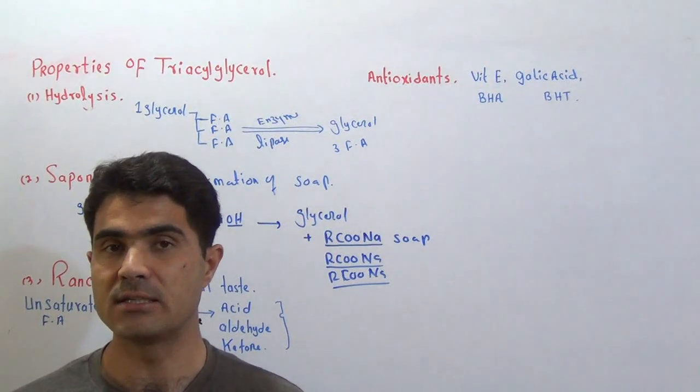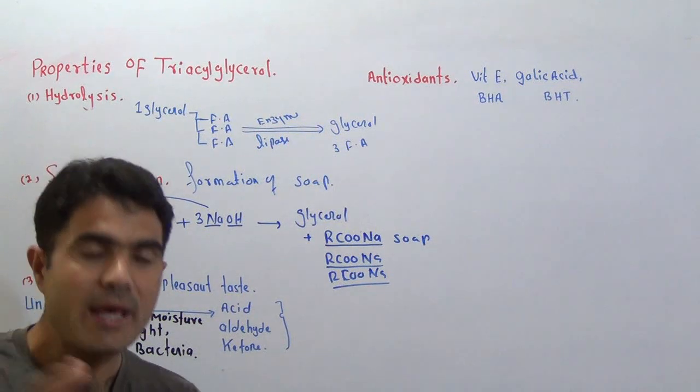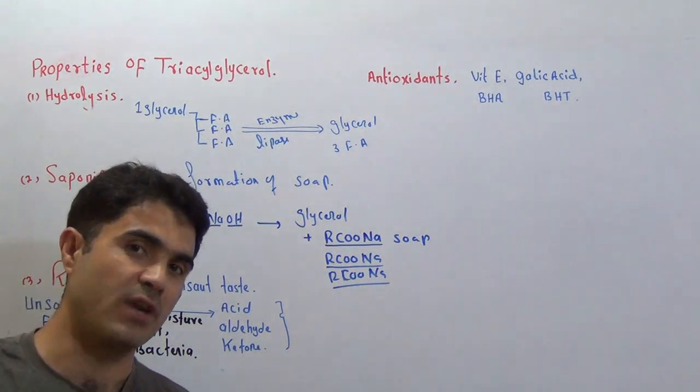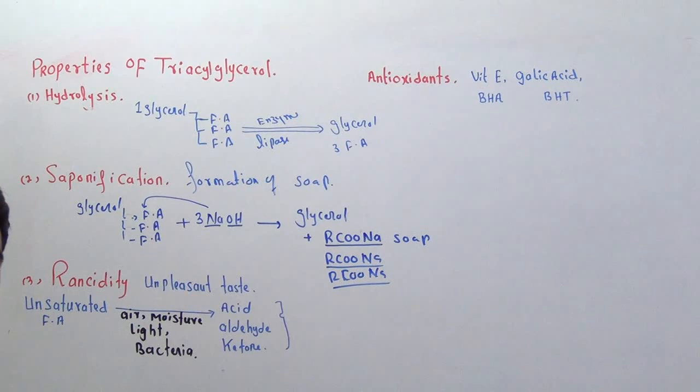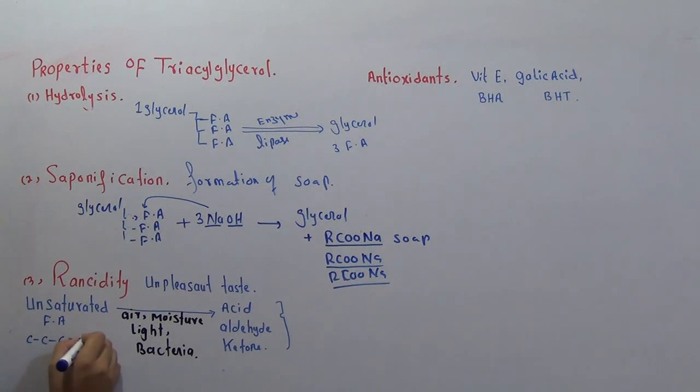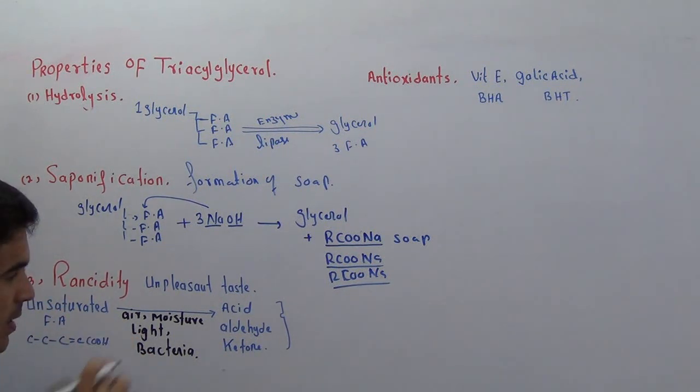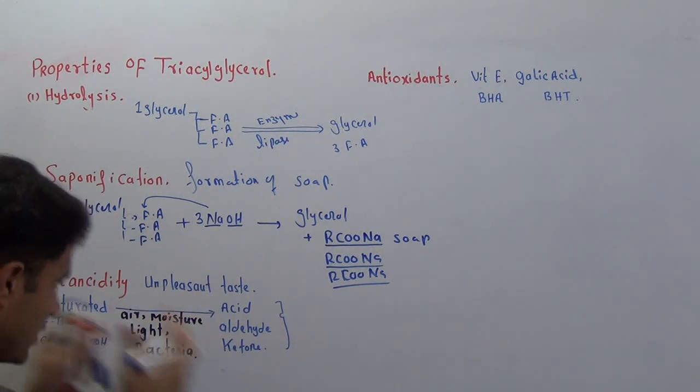Rancidity usually happens in unsaturated fatty acids. Fats are of two types: saturated and unsaturated. In unsaturated fatty acids, between the carbons somewhere there is a double bond. Such fatty acids are called unsaturated fatty acids. When such unsaturated fatty acid is exposed to air, moisture, light, or bacteria, because of exposure to these things...